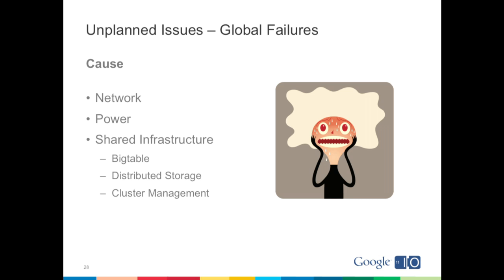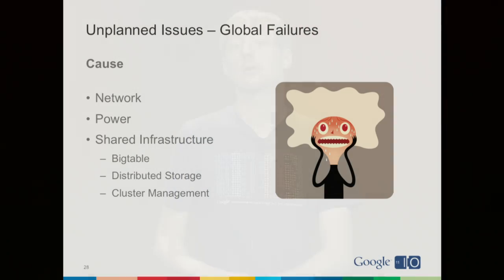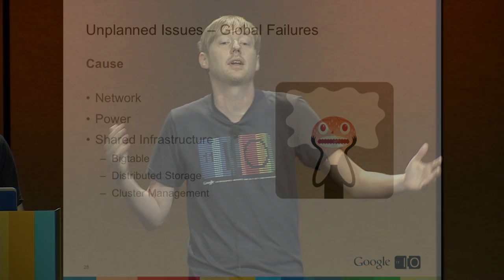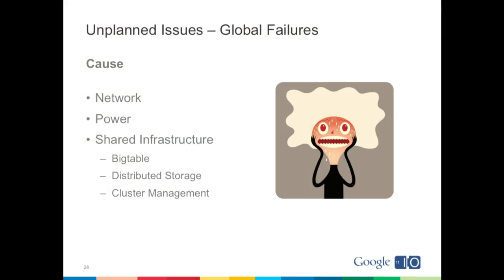Let's talk about failures on a global level. These are failures that render an entire data center offline or unusable. Examples include fiber optic cables connecting the data center getting cut, a power outage where backup generators fail, or a major bug in lower-level infrastructure that renders the data center completely useless. Google's data centers are really big, so when these things happen, it tends to take a long time to recover. Turning all machines back on, checking disks, and starting all processes takes a long time at Google's scale. Similarly, if fiber optic cables get cut, it takes a long time to get those cables repaired.